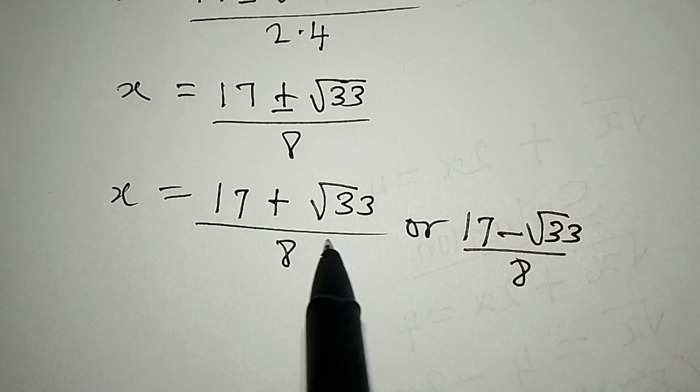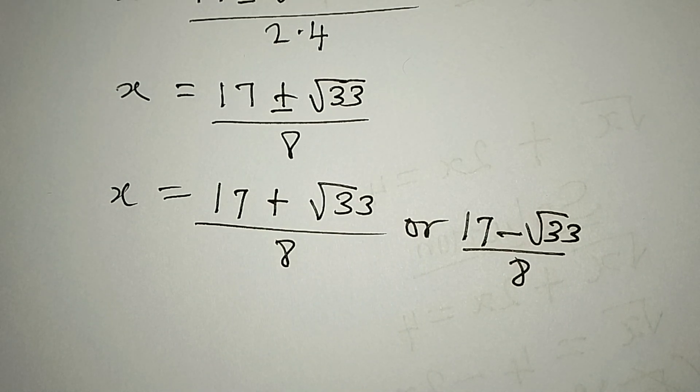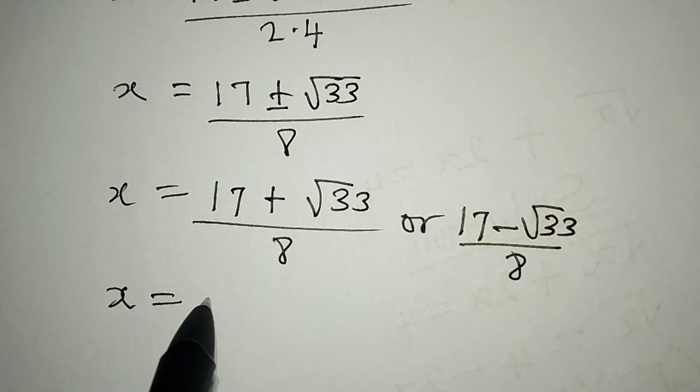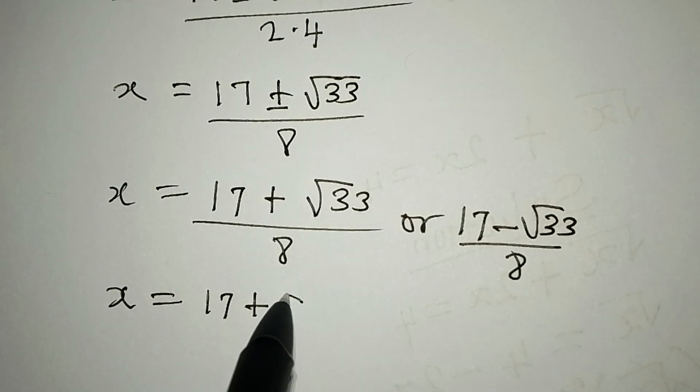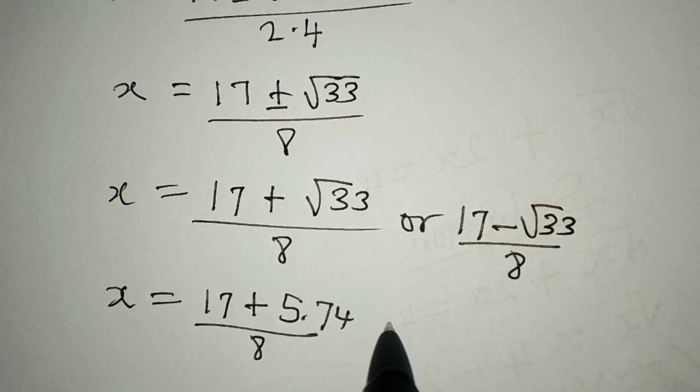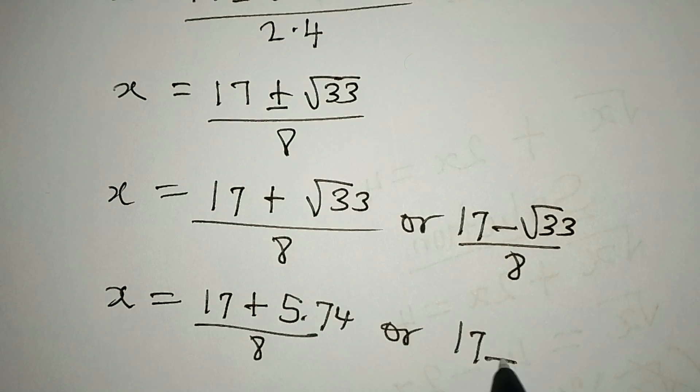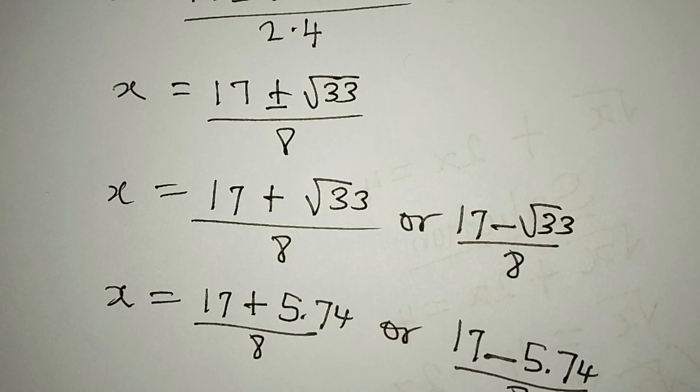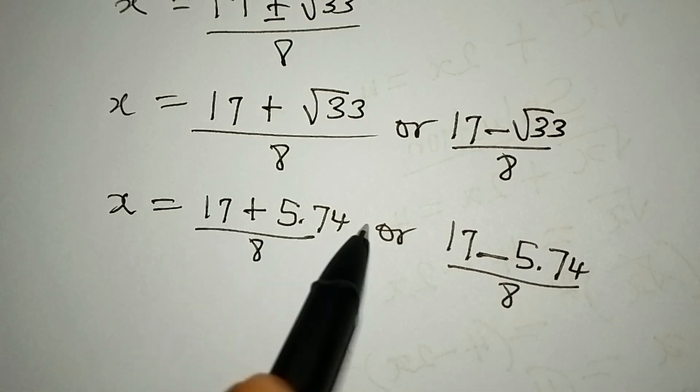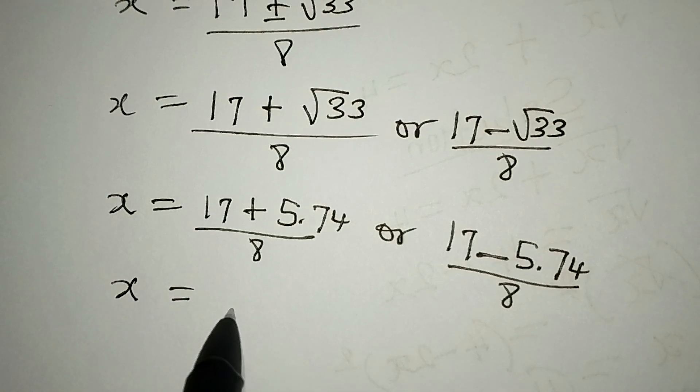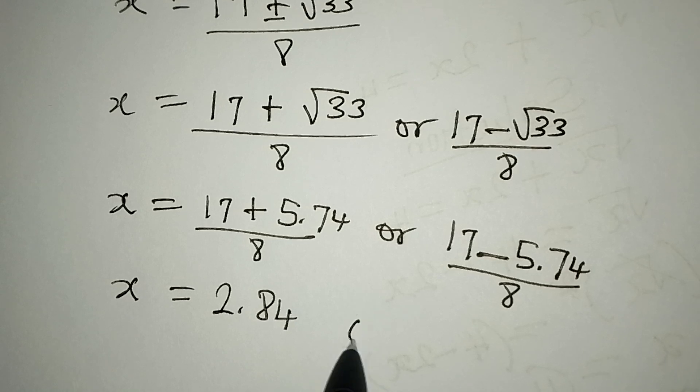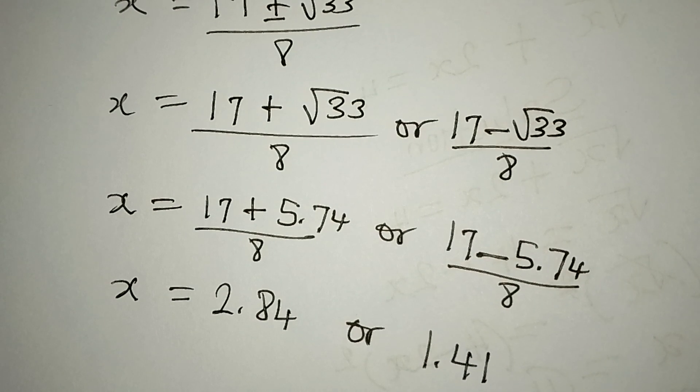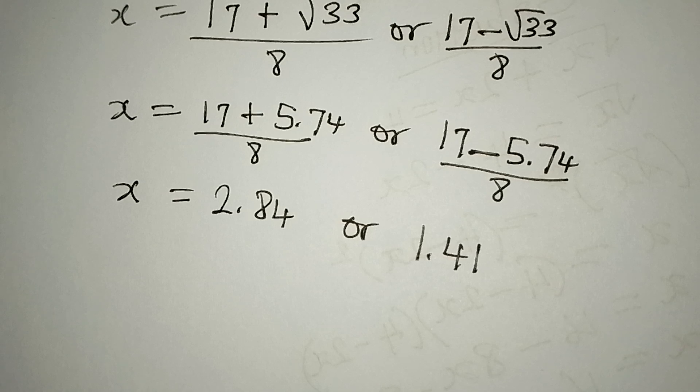So I would like to get the decimal value for this. We have x equal to 17 plus square root of 33 is 5.74 over 8, or 17 minus 5.74 over 8. If you add this and divide by 8, you have x approximately 2.84, or on this side 17 minus this divided by 8 is approximately 1.41. But since we are having two positive values, it means that both of them will not be satisfying; they cannot satisfy the given equation.